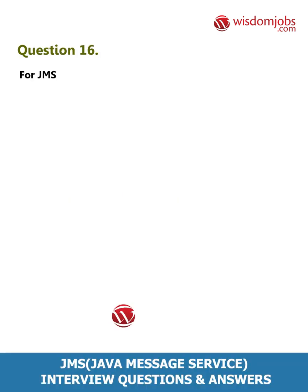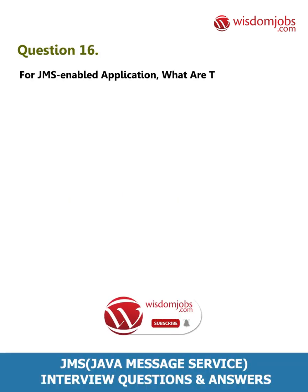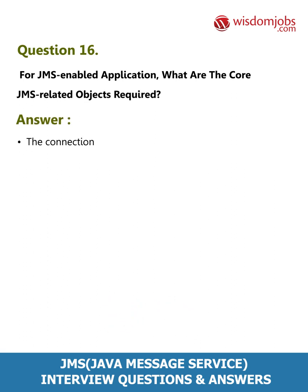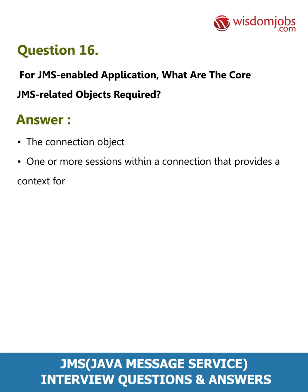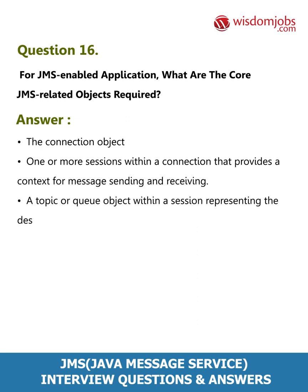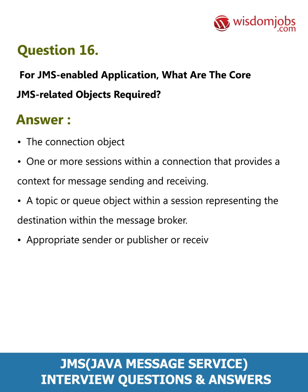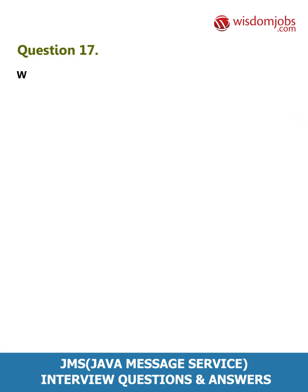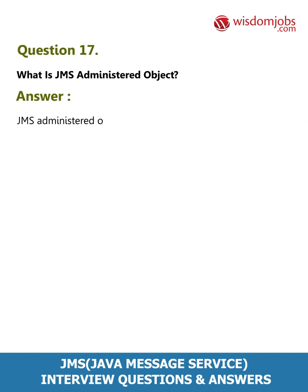Question 16: For a JMS-enabled application, what are the core JMS-related objects required? Answer: The core JMS-related objects required are the connection object, one or more sessions within a connection that provides a context for message sending and receiving, a topic or queue object within a session representing the destination within the message broker, and an appropriate sender, publisher, or receiver within a session.